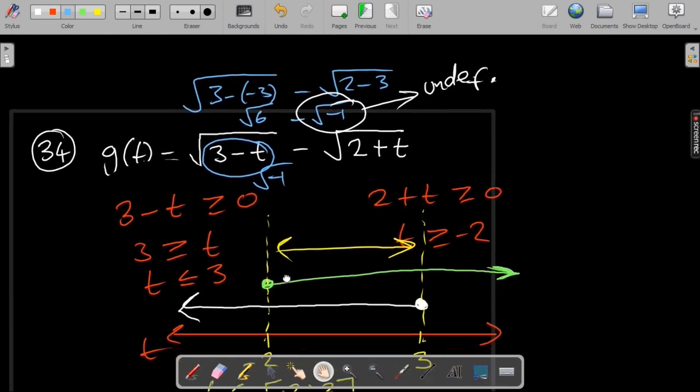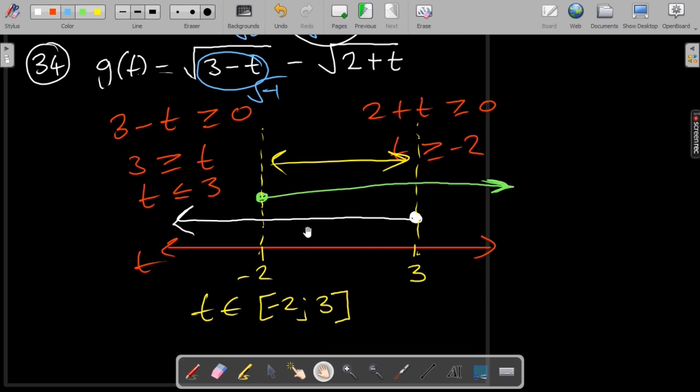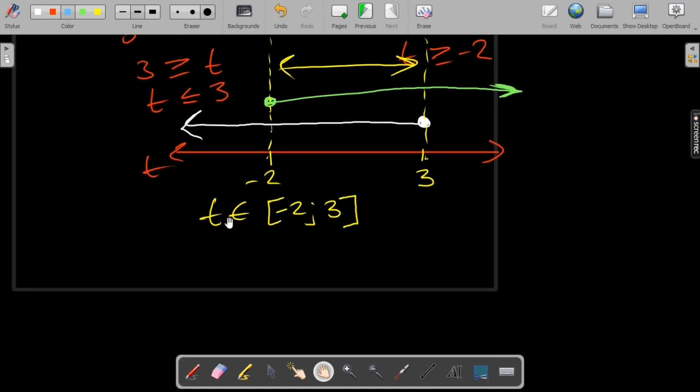So this function is only defined where both of them are defined and when both of them are defined it is also defined. So the domain or the t values which lead to this function or which allow the function to be defined are between minus 2 and 3 included. Another way you could write this if you want to be minus 2 less than or equal to t less than or equal to 3 which basically means the same thing.